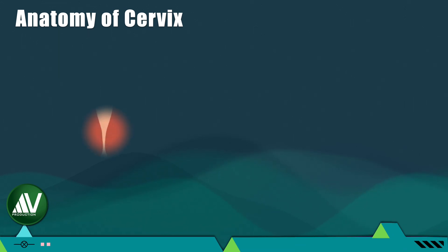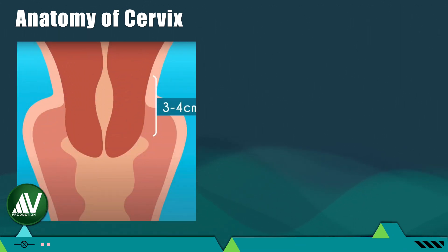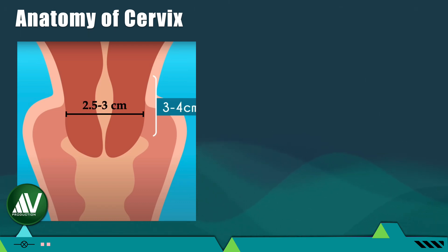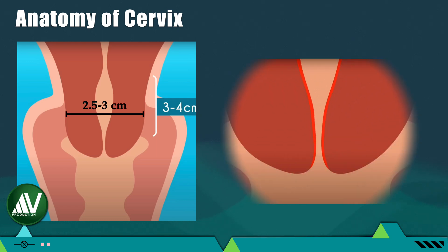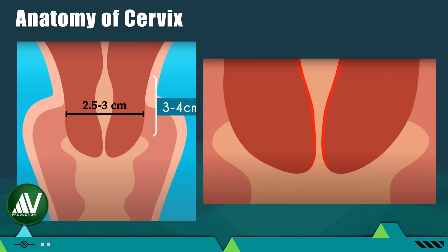First some basics. The cervix is a cylindrical, 3–4 cm long and 2.5–3 cm broad fibromuscular organ distinct from the uterine body. It has its own anatomy, physiology, function, and pathology.